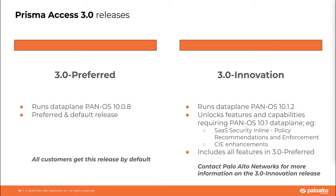Prisma Access 2.2 Preferred is a prerequisite for Prisma Access 3.0 Preferred. If your deployment is on an earlier version like 2.1 or 2.0, you need to upgrade to 2.2 before upgrading to 3.0. Prisma Access will make the 3.0 plugin available after your deployment has been upgraded to 2.2 Preferred. Make sure you have signed up for all email alerts in the Prisma Access app so you receive notifications via Prisma Access Insights when the 3.0 plugin is available.